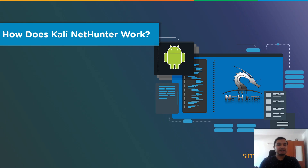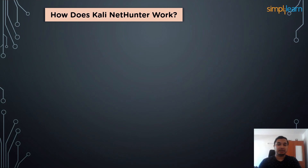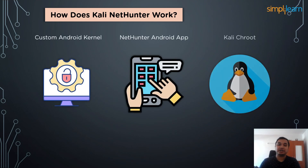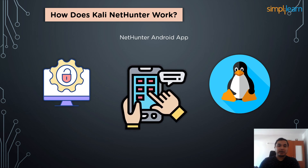Now that we've covered the different versions of Kali NetHunter, let's cover its different components and how they help in the working of this distribution. NetHunter's framework comprises various pieces that communicate and rely on one another to function properly. The three components that make up NetHunter are: a modified Android kernel, the NetHunter Android app, and the Kali Linux chroot itself.